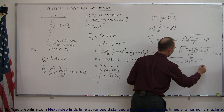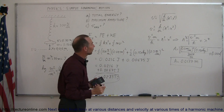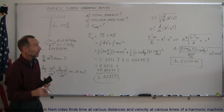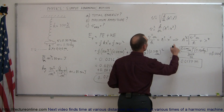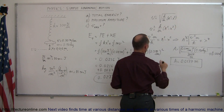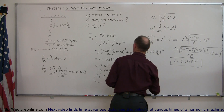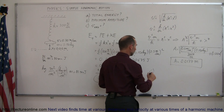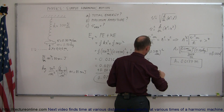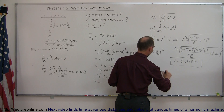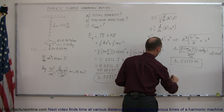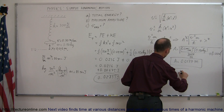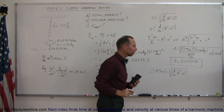Finally, what is the maximum velocity? Now that we have the maximum amplitude, we plug it back into the velocity equation and let x equal zero, because the maximum velocity occurs when x equals zero — at the equilibrium point. So velocity when x equals zero is equal to the square root of k over m times (a squared minus zero squared).